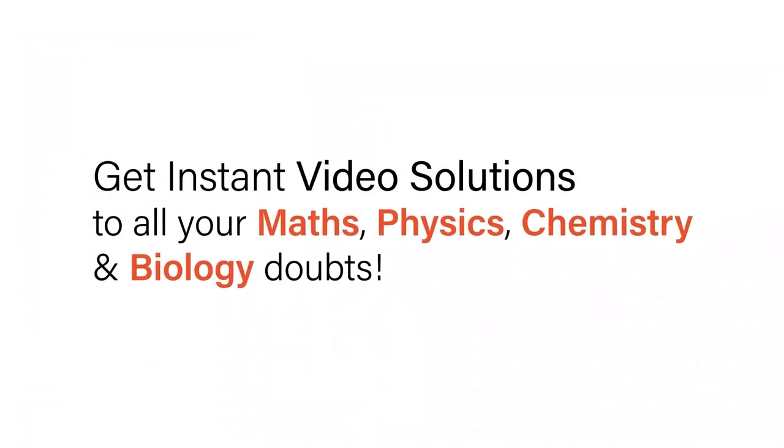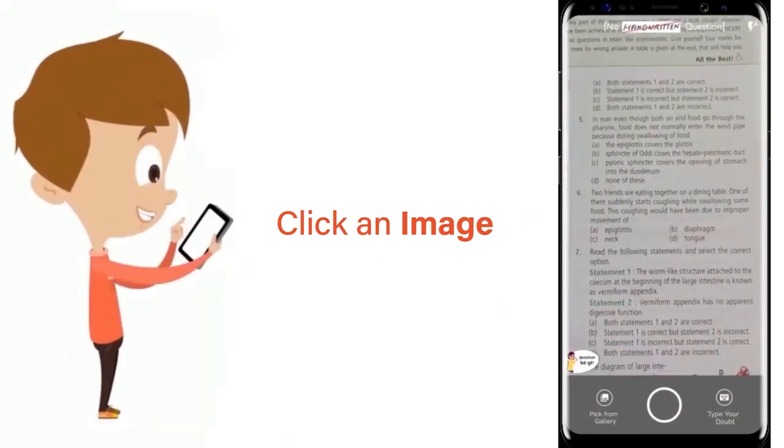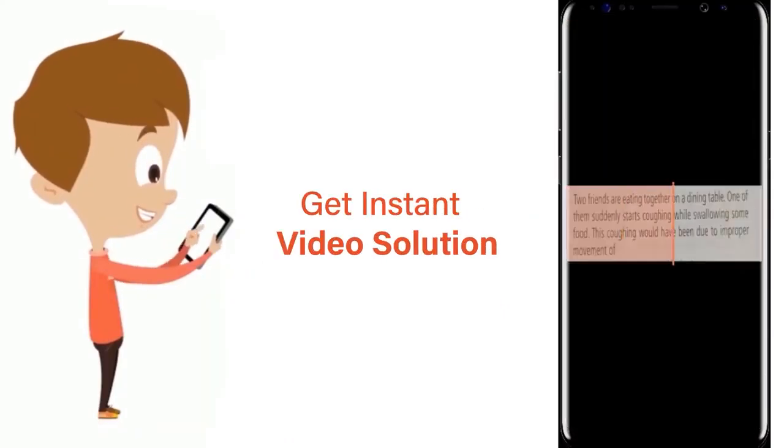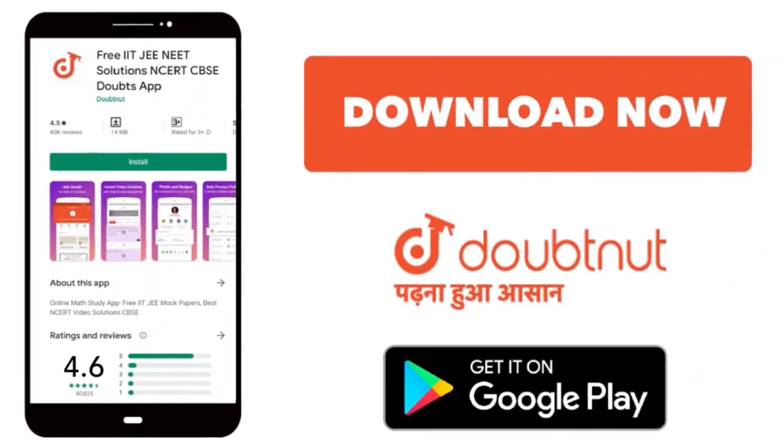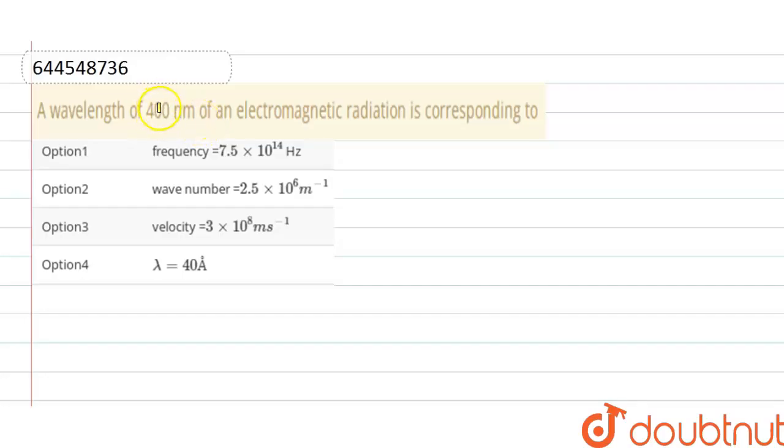With Doubtnet, get instant video solutions to all your maths, physics, chemistry, and biology doubts. Just click the image of the question, crop the question, and get instant video solution. Download Doubtnet app today. Hello everyone, here the question is a wavelength of 400 nanometer of an electromagnetic radiation is corresponding to.